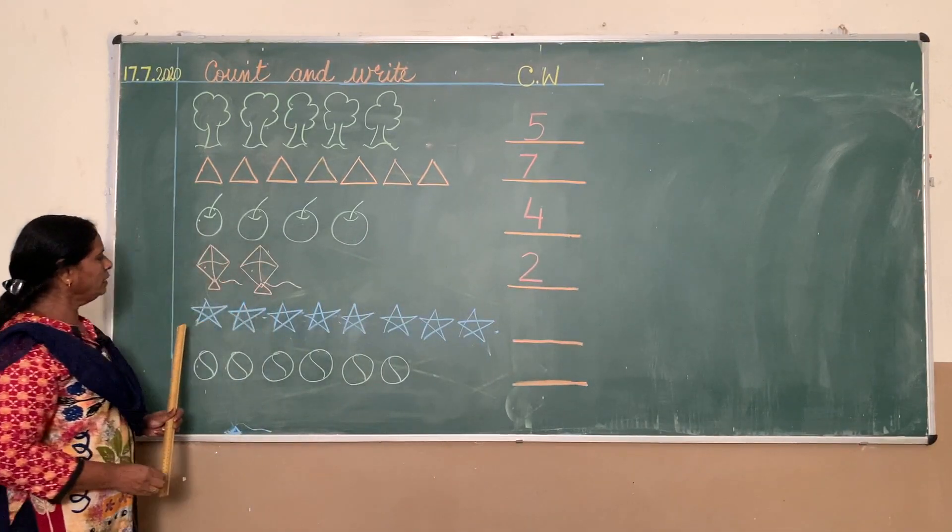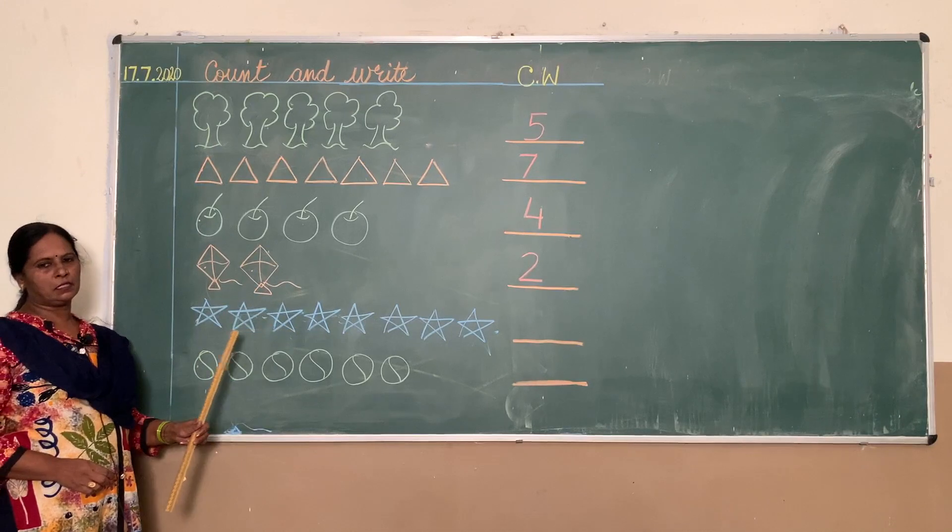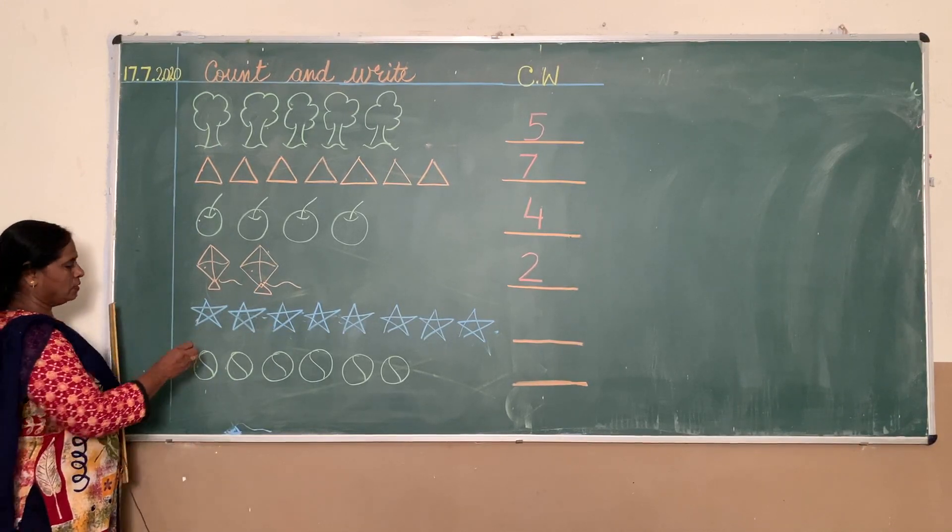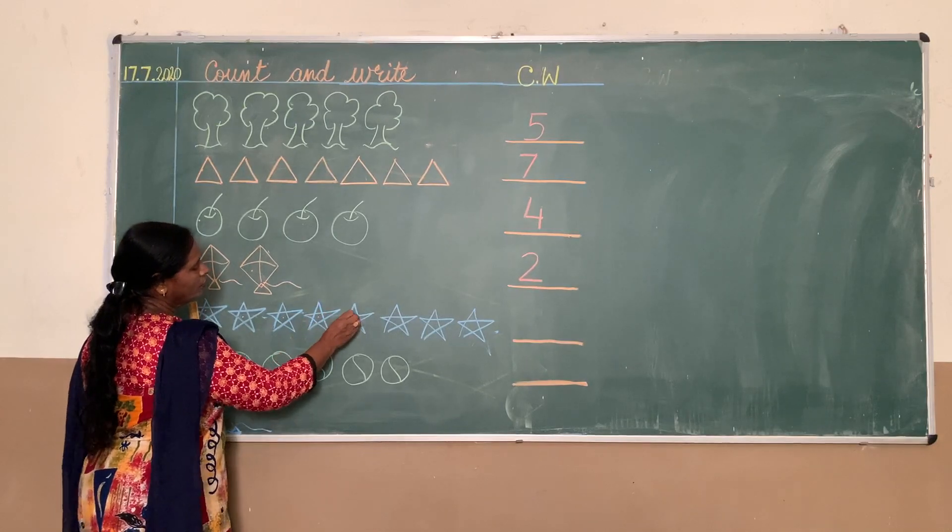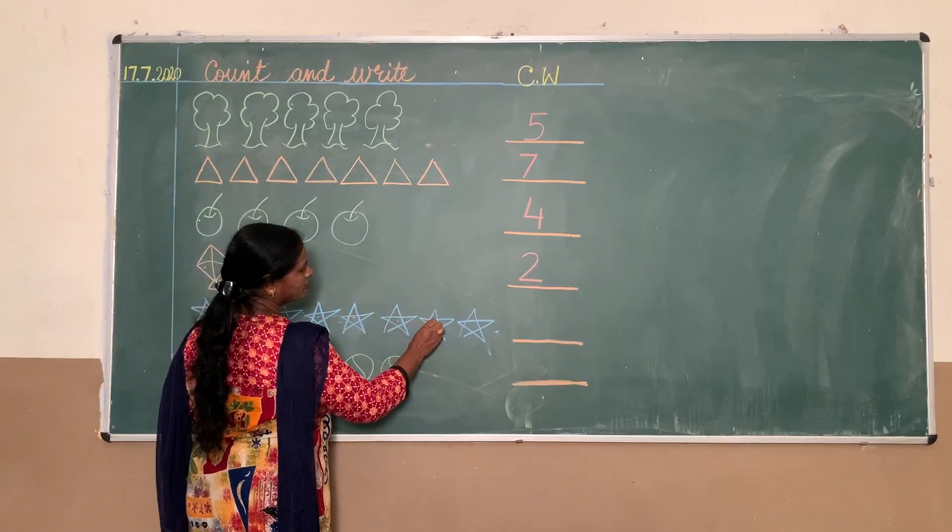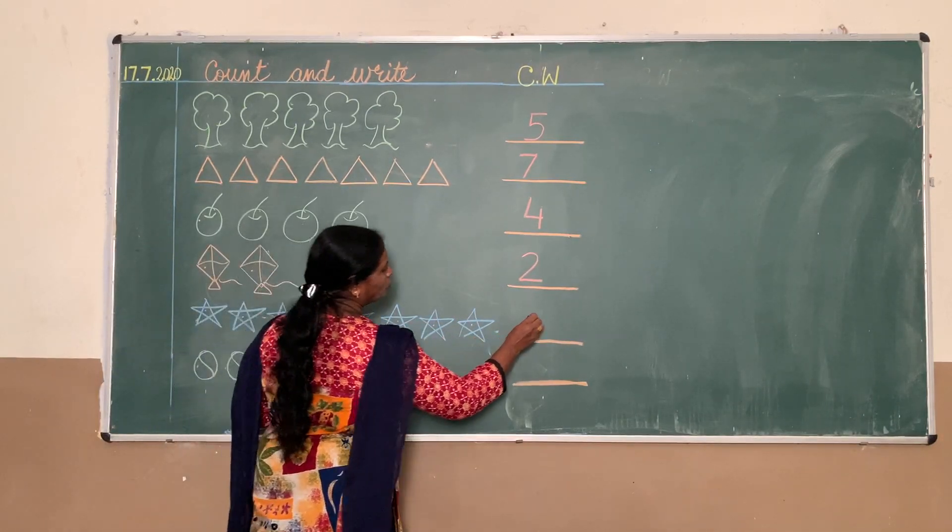Now see, these are stars. Now let's count the stars. One, two, three, four, five, six, seven, eight. So you write eight here. There are eight stars.